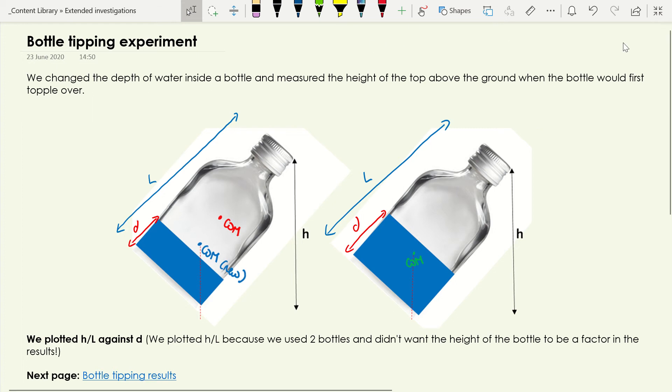Firstly, just a quick reminder about what we did. We had a bottle, or two bottles actually, and what we did is we changed the depth of water inside the bottle and we measured the height of the top of the bottle above the ground at the point where it just topples over. So you keep tipping and tipping and tipping the bottle until you get to a point where it actually falls over, and we measured this height for that particular bottle.